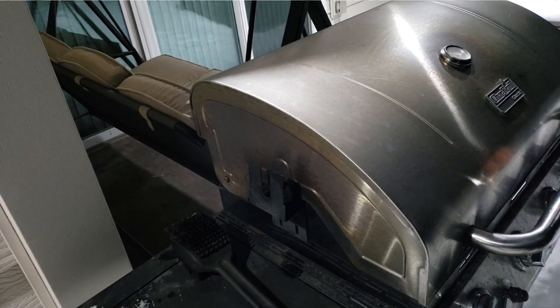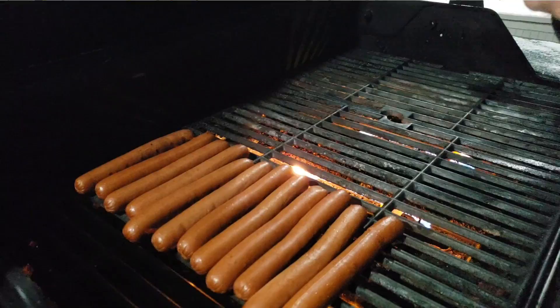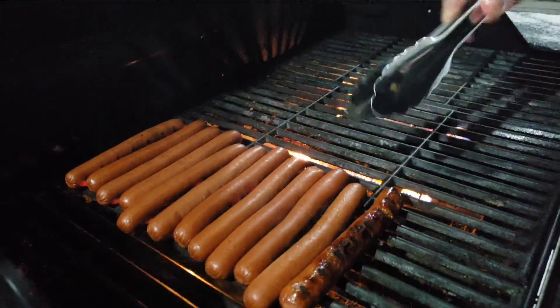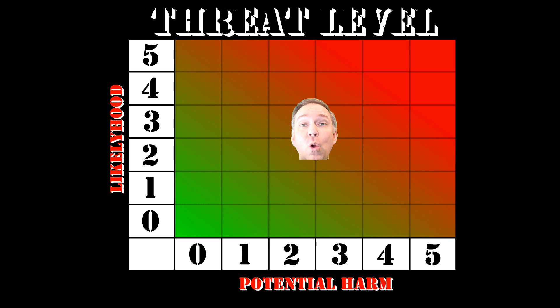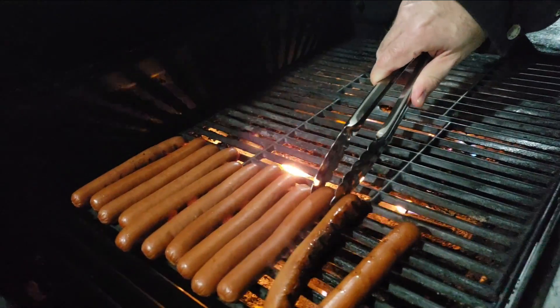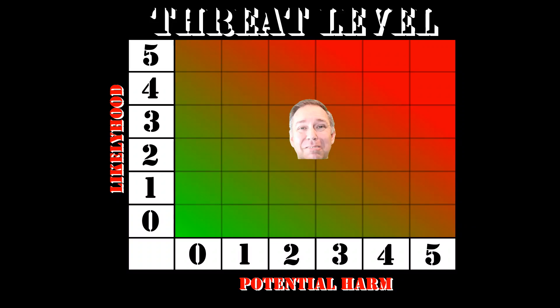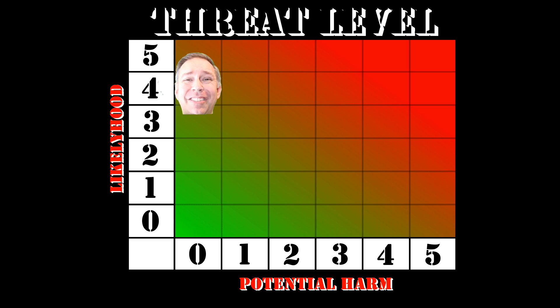Let's do an easy example. Let's say you're cooking some hot dogs on the grill. Not too dangerous — but what is the hazard here? It's hot, and you could get burned. The question is, how likely is that to happen? With those tiny tongs, I think it's pretty likely — like a four. Okay, how bad am I going to get hurt if it does happen? Not too bad, but it's still going to hurt — I'll give it a one. Those two numbers together give us a threat level of five, which isn't too bad, but it's not good either. So what can we do to either reduce the likelihood or reduce the damage?